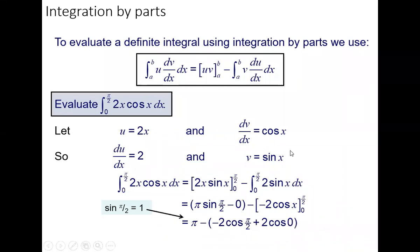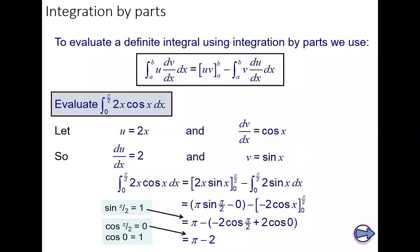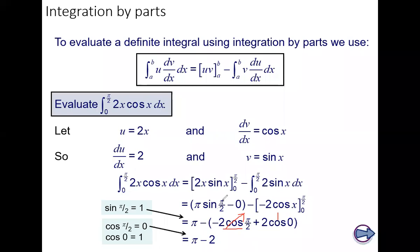Once we've evaluated the limits of integration, the final answer equals π minus 2. This side is zero, so it goes to zero. This gives 2 times 1 = 2 with the negative outside giving minus 2. sin(π/2) = 1, so π times 1 = π. The final answer is π minus 2.